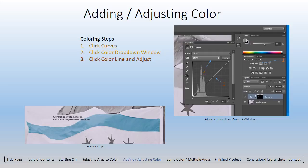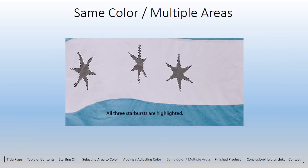Now you see I've already adjusted the color that I want. The gray area is now blue — not so blue that you cannot see the texture of the flag and some of the flag rippling. So we've just colored one area already.